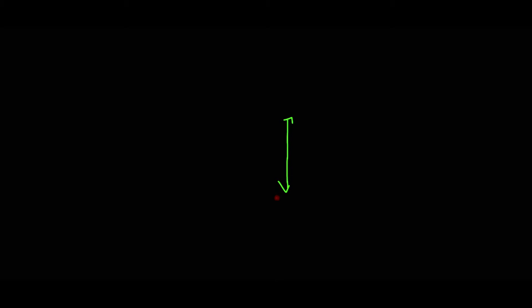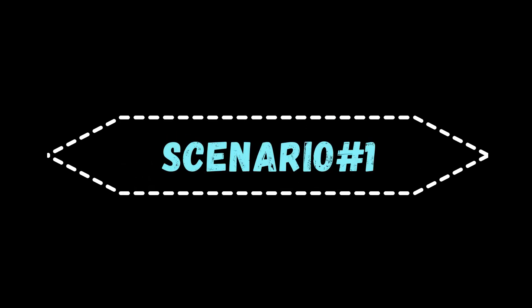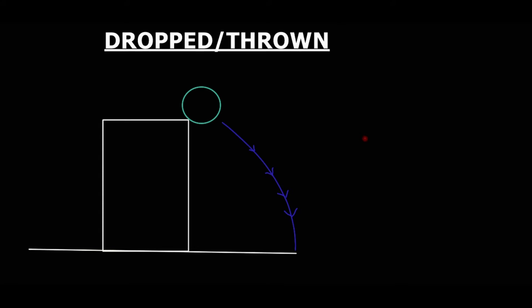There are some important scenarios where an object is being dropped or being thrown. Our first scenario is a situation where we drop something like a ball. Because this ball is dropped, the initial velocity is going to be zero, because no one is throwing the ball. So the initial velocity is zero.